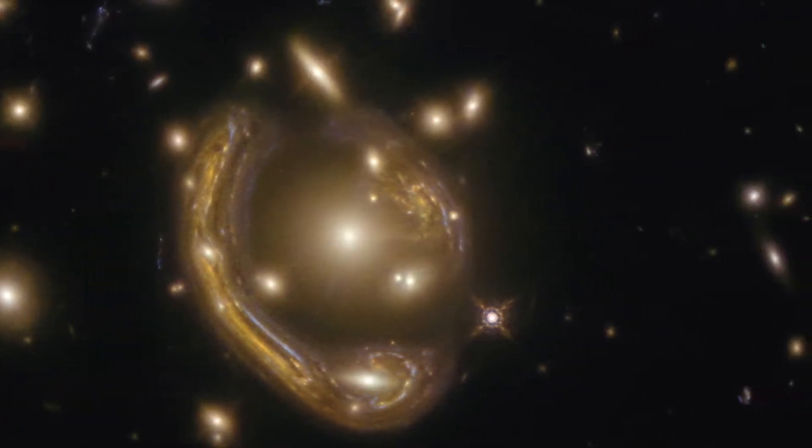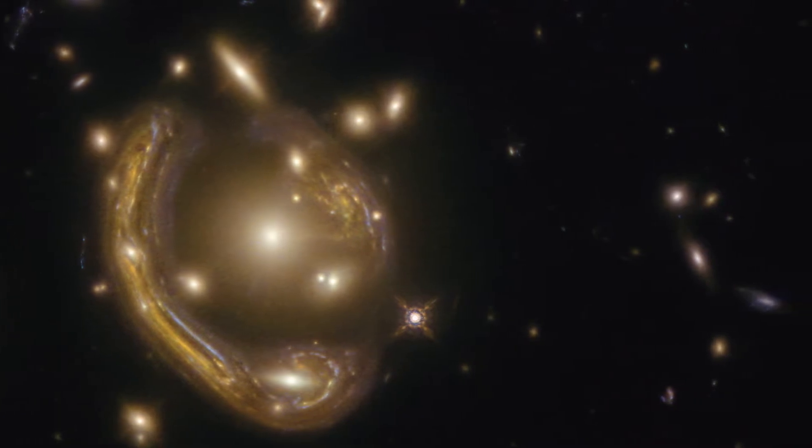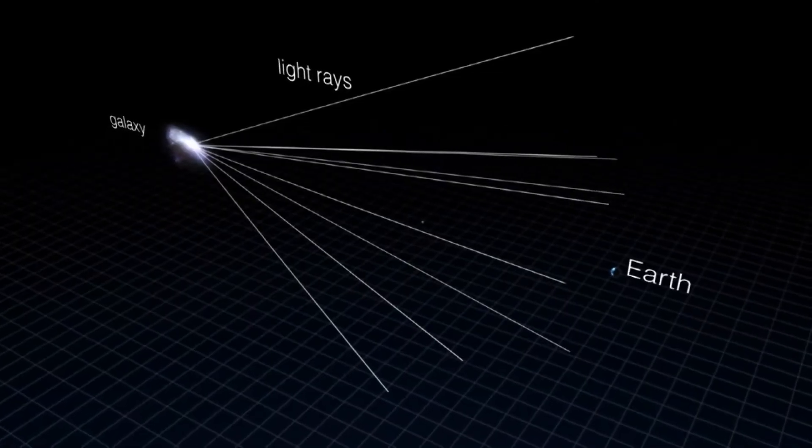This object's unusual shape is the result of gravitational lensing. Albert Einstein, in his general theory of relativity, first theorized that a large gravitational field could act as a lens.